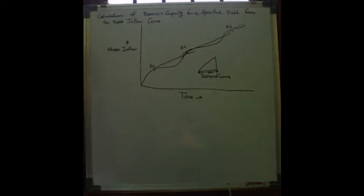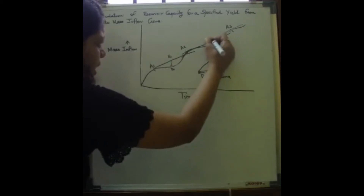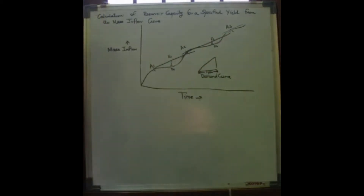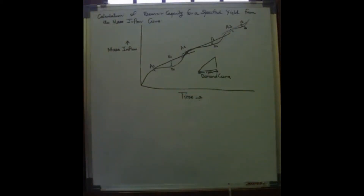We will draw tangents and measure the maximum vertical intercepts E1D1, E2D2, E3D3, etc., between the tangent and the mass inflow curve. These are the maximum ordinates only.